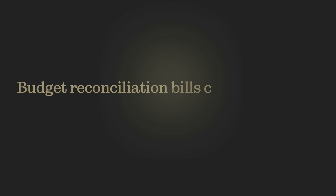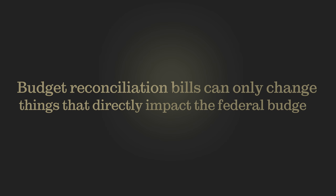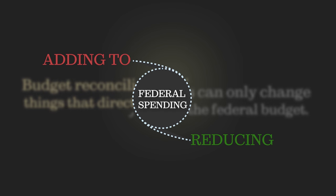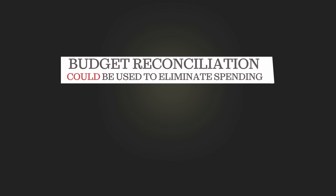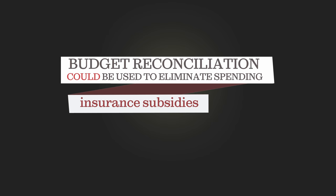Debate is strictly limited, and the bill only needs a simple majority to pass. But there are limits, too. Budget reconciliation bills can only change things that directly impact the federal budget, either adding to or reducing federal spending. For the Affordable Care Act, that means Congress could use budget reconciliation to eliminate spending, like the help people get to pay for their premiums.